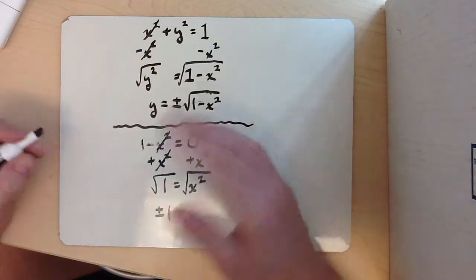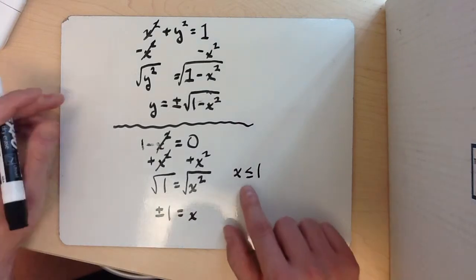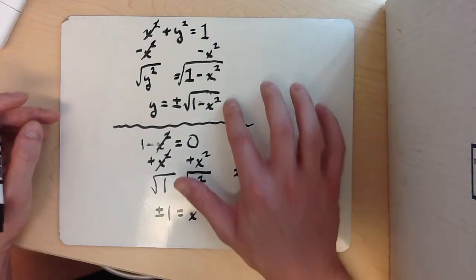And you could try 3, 4, 5 - you could try any number that's greater than 1 and you'll notice that it does not work. So x can be less than or equal to 1 for the domain.